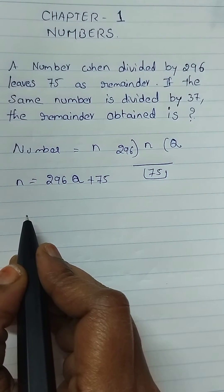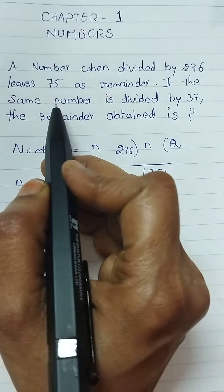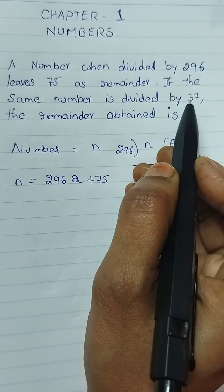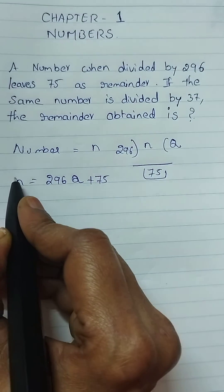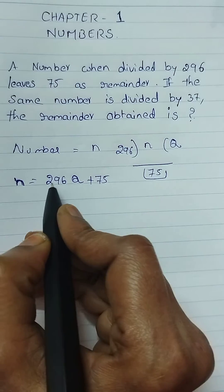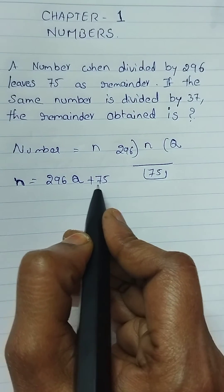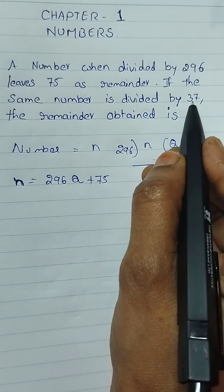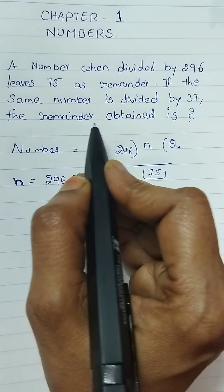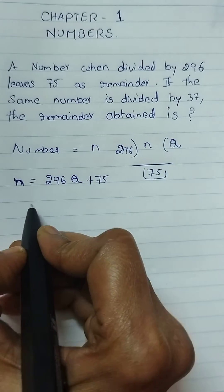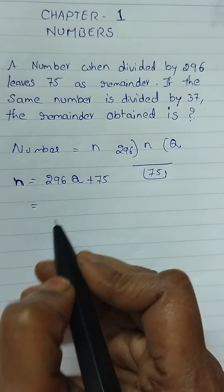So n can be written as n equals 296 into quotient plus remainder, which gives the result n. Now what we have to find out: if the same number is divided by 37, what is the remainder?